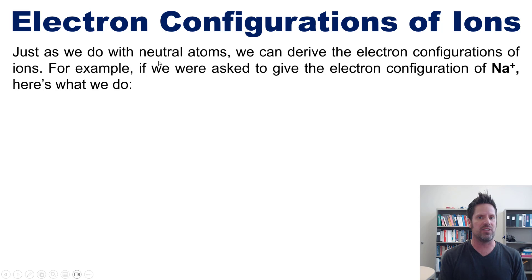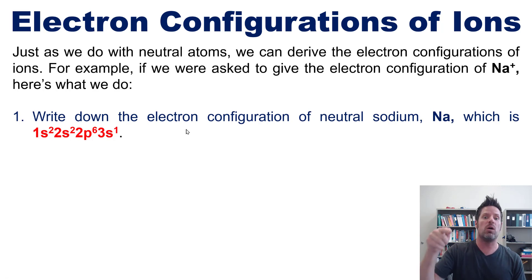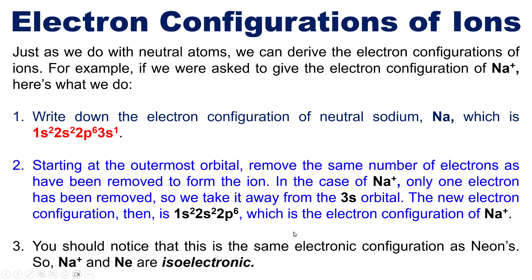Just as we do with neutral atoms, we can derive the electron configurations of ions — atoms that are charged because they've gained or lost electrons. For example, to find the electron configuration of Na⁺: first write the configuration of neutral sodium, then starting at the outermost orbital (the 3s orbital), remove the number of electrons corresponding to the ion's charge. Sodium has one electron in its 3s orbital; removing it gives us the electron configuration of Na⁺. You'll notice Na⁺ has the same electron configuration as neutral neon — they are isoelectronic.